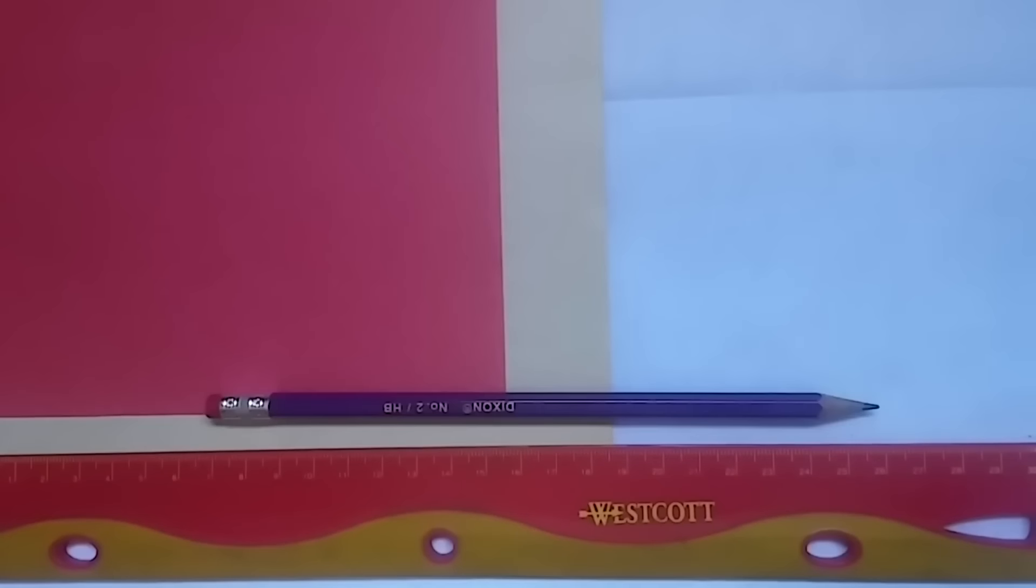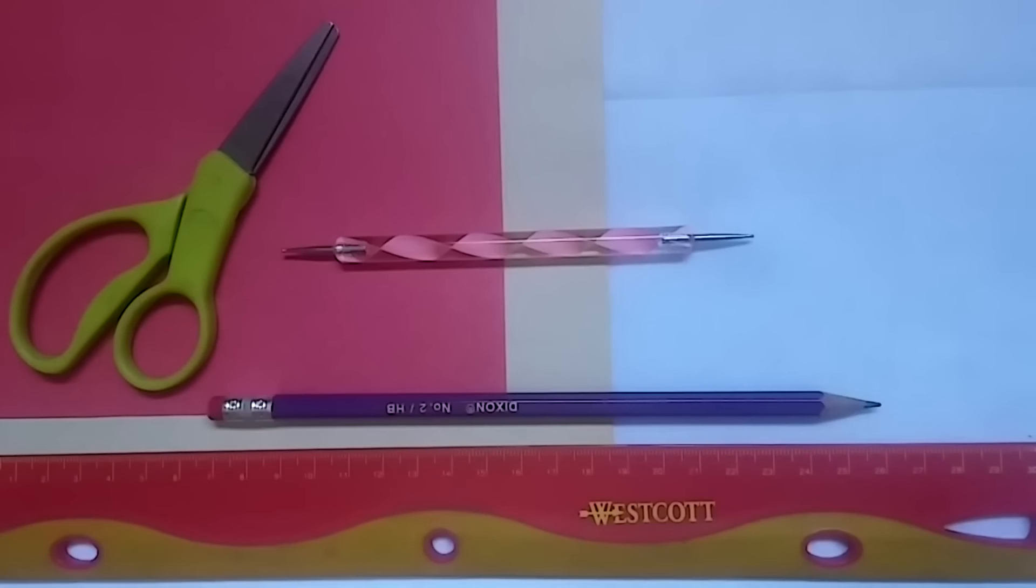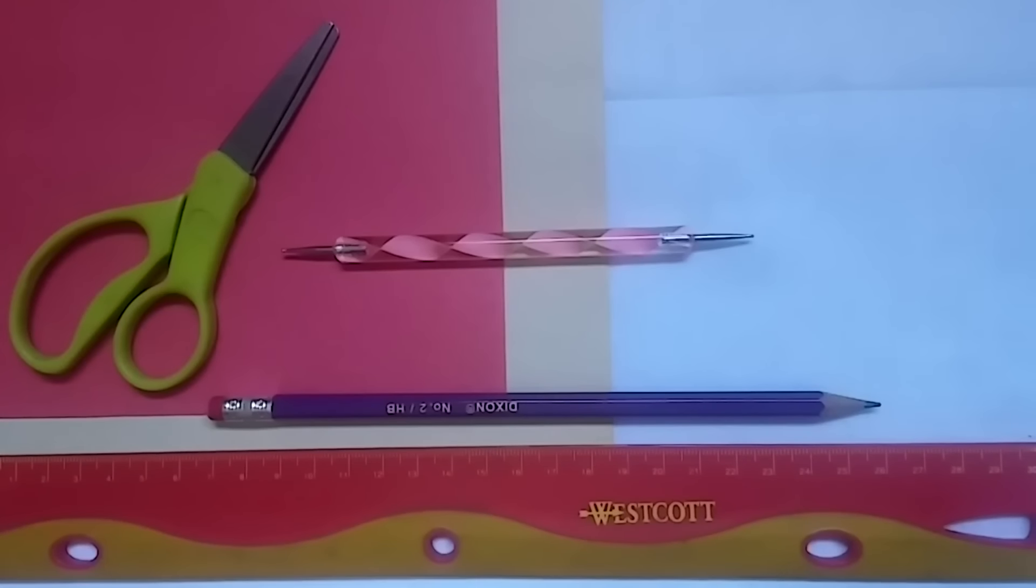The things you'll need are construction paper. You can either use two colors or just one. Ruler, pencil, scissors, scoring tool like an empty mechanical pencil or dotting tool, and glue or double-sided tape. I'll be using a glue stick. Let's begin.